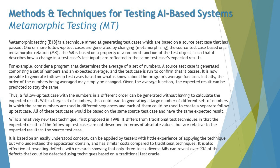For example, consider a program that determines the average of a set of numbers. A source test case is generated comprising a set of numbers and an expected average, and the test case is run to confirm that it passes. It is then possible to generate follow-up test cases: the order of the numbers being averaged may simply be changed, and given the average function, the expected result can be predicted to stay the same.